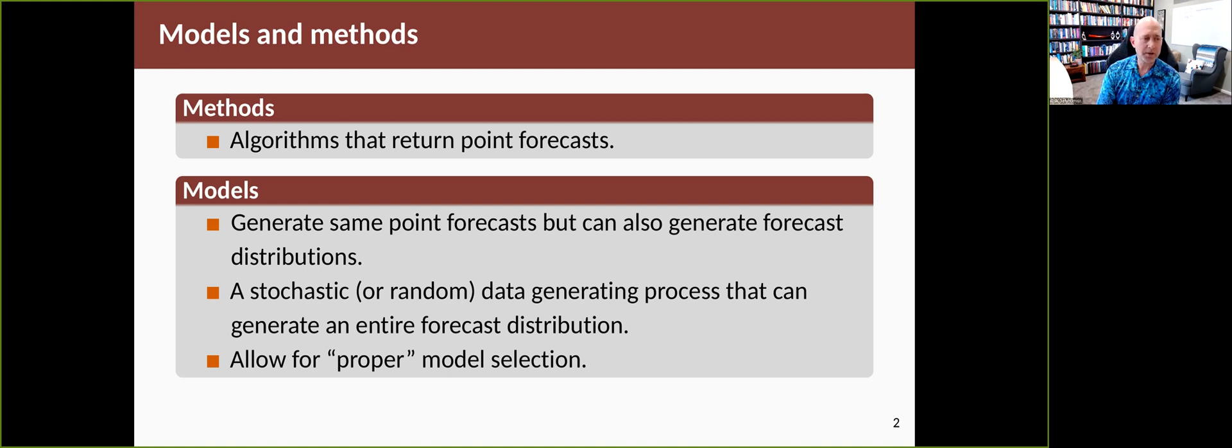So a model is a stochastic equation that includes some kind of random component. And we're going to have two different models for every one of the methods that we've talked about. The two models will both generate the same point forecast, but could have quite different variances, and therefore different forecast distributions. So when we talk about a model, we mean a stochastic data generating process that can generate the whole forecast distribution.